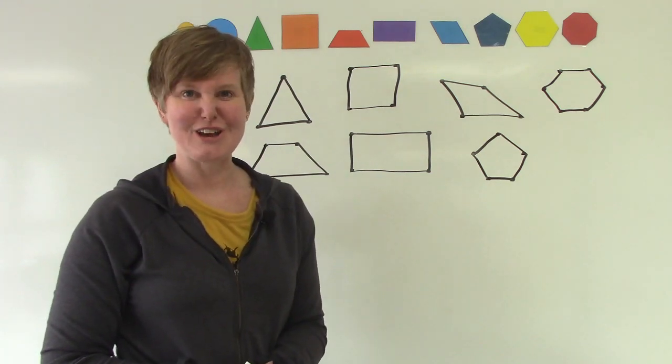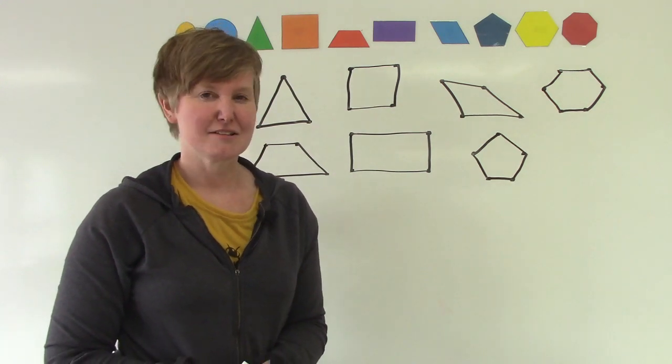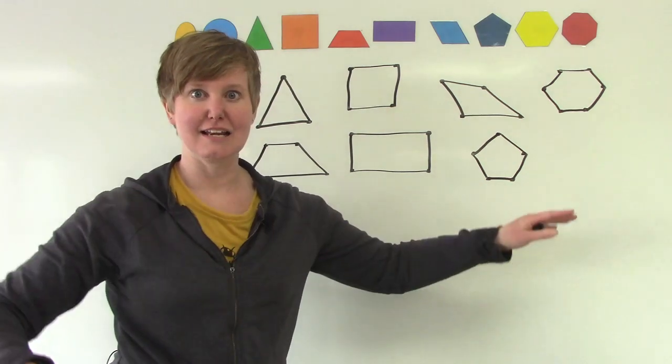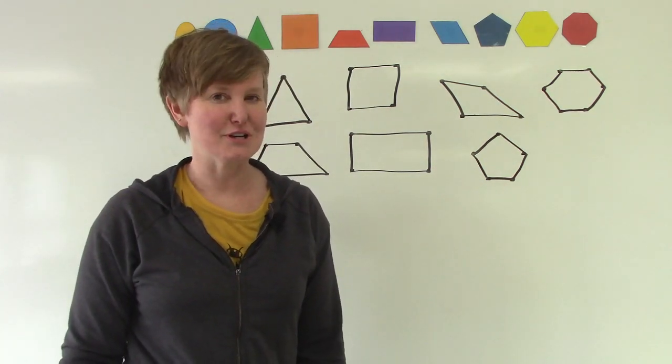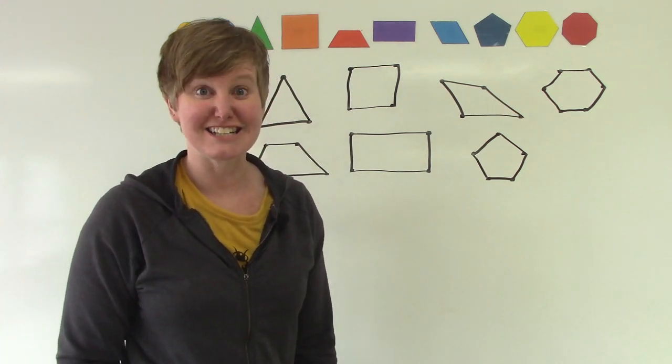What would it be called if our shape had eight sides? Do you remember? There's a sea creature that has eight legs. What is it called? An octopus. An eight-sided shape is called an octagon.